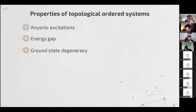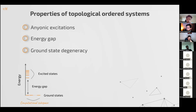We are looking for systems with topological order, or systems in a topological phase of matter. These systems have three important properties: anionic excitations, an energy gap, and a ground state degeneracy. The last two are very important because using the degeneracy of the ground state, we can define the computational subspace, which is protected from errors by this gap.